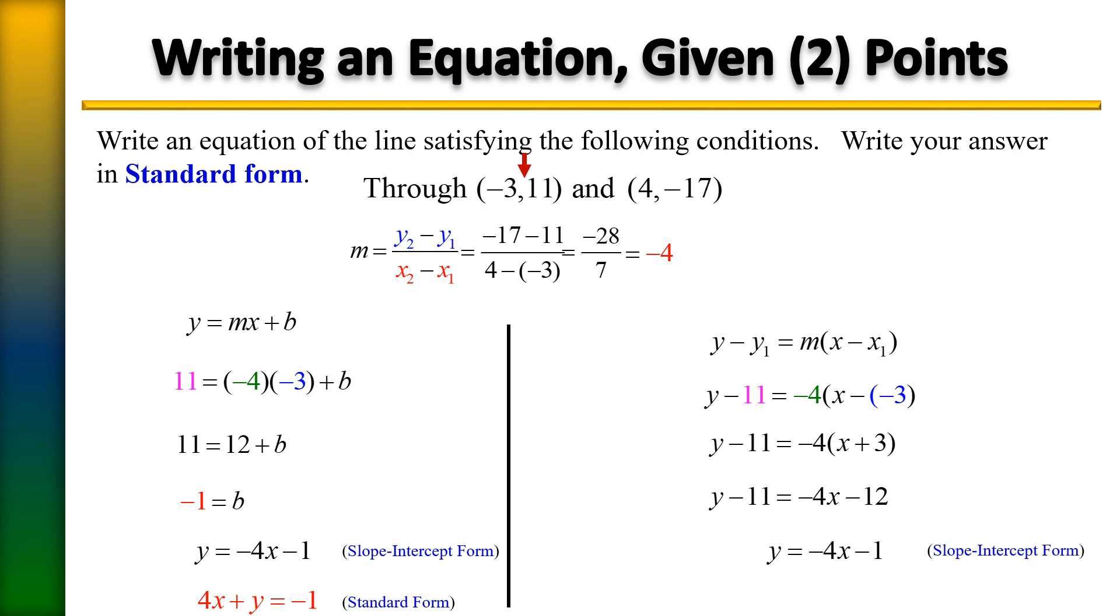And then all we need to do is, again, to get it in standard form is to simply add 4x to each side. And we have our line, which is 4x plus y equals -1.